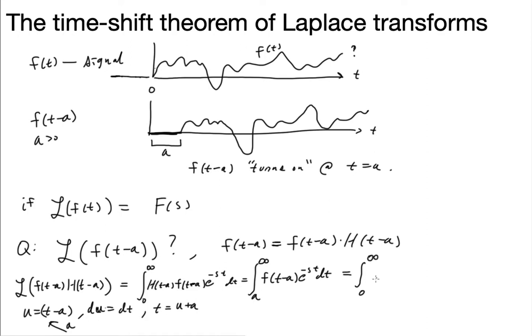But then every time where there's a t here, I have to put a u plus a. And that's going to be e to the negative sa, e to the negative su, du. Well, I can keep going along here and actually pull out this term right there. That factor there has nothing to do with u in it. So it's going to go e to the negative sa integral zero to infinity of f of u e to the negative su du.